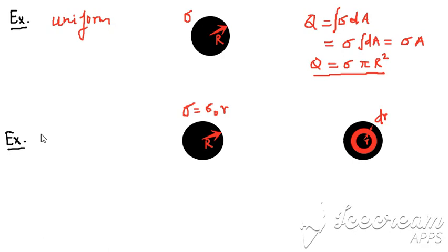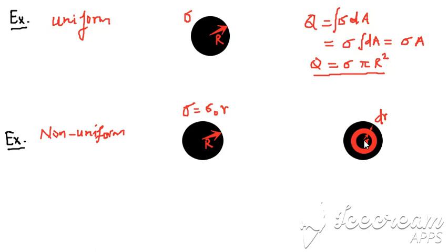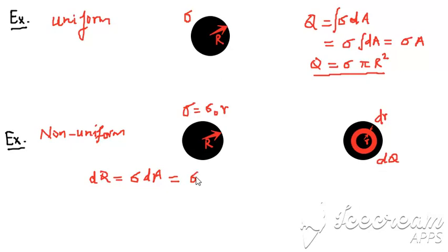In Example 2, the charge distribution is non-uniform, given by σ = σ₀ r. This means at r = 0 (the center) there is no charge, and the maximum charge is on the periphery — charge density increases from center to periphery. We start from the origin, go up to radius R, and consider a thin annular ring of thickness dr carrying differential charge dQ. In the two-dimensional case, dQ = σ dA, where σ = σ₀ r.